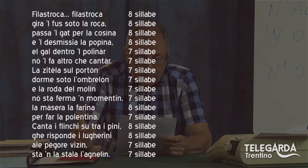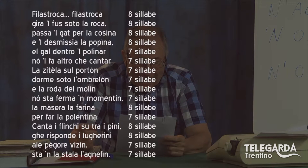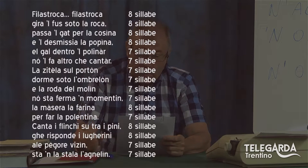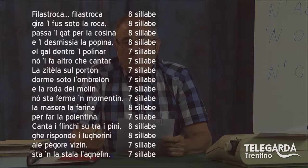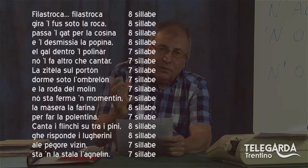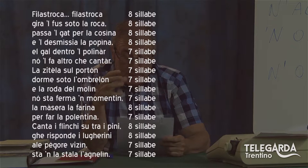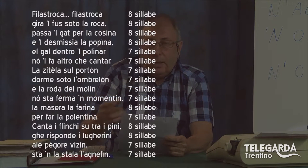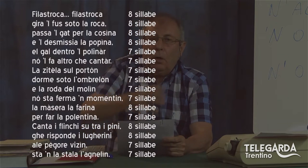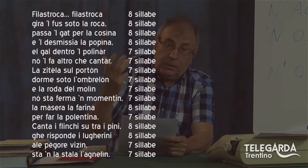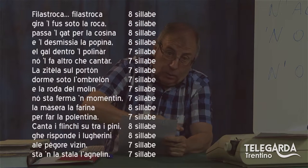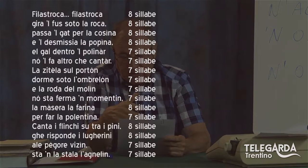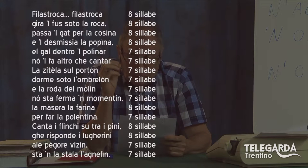Poi improvvisamente, attenzione: la masera, la farina diventano otto, poi sette, poi otto. Naturalmente quando uno usa un verso ben definito dal punto di vista del numero delle sillabe, bisognerebbe che avesse una certa uniformità. Non può scrivere quattro versi di otto sillabe, poi uno di sette — deve fare una certa regolarità: otto versi di otto sillabe, oppure quattro di otto, due di sette, altri quattro di otto, due di sette. Qui naturalmente questa filastrocca è un po' disordinata da questo punto di vista.